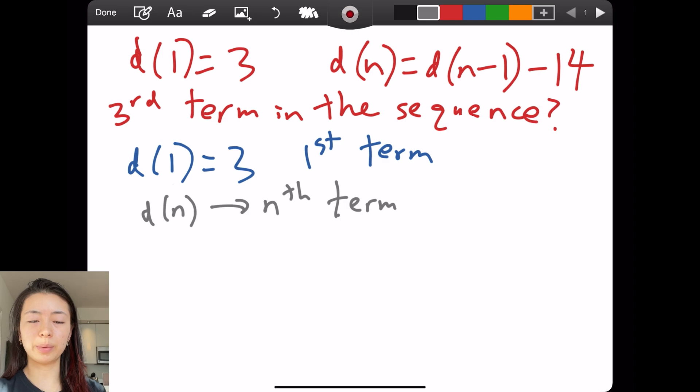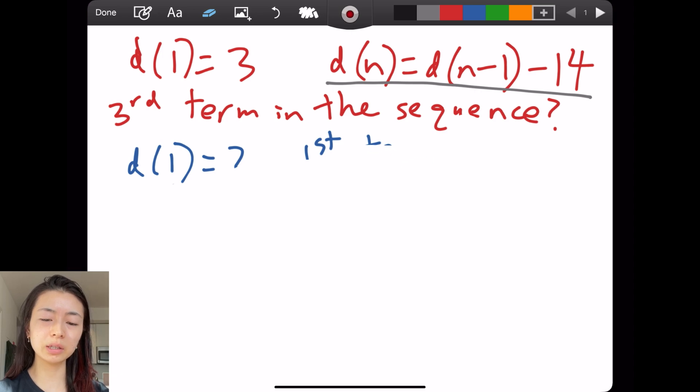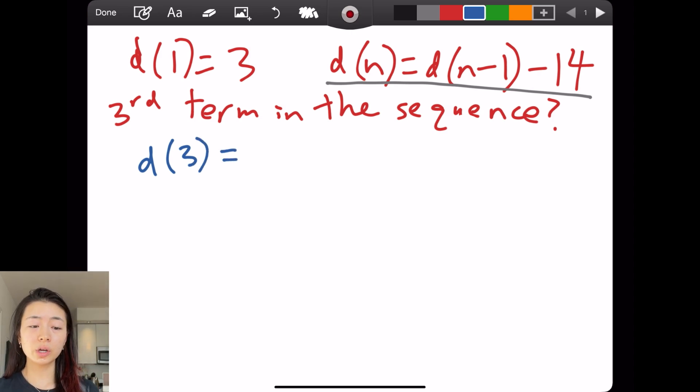So we have to understand the basic definitions first. Next, what is all the information given? What does D(1) equals 3 mean? This means that when you plug 1 in for n, we get 3. This means that it's the first term in the sequence. And therefore, just to extend it, if we have D(n), that's just the nth term in the sequence. We're not going to worry about this expression yet, because it might be a little daunting.